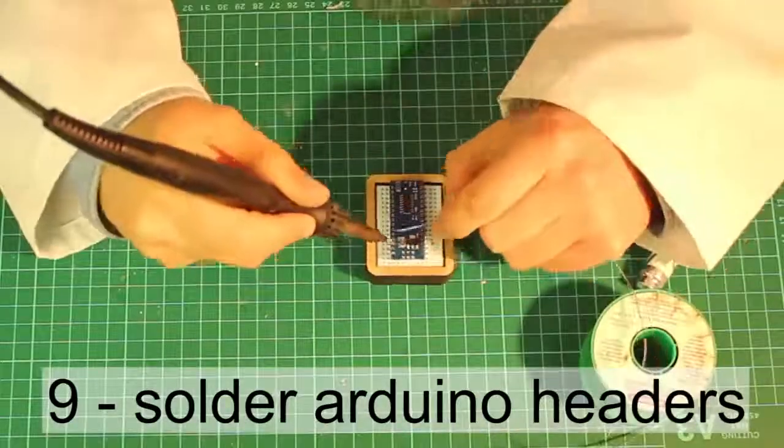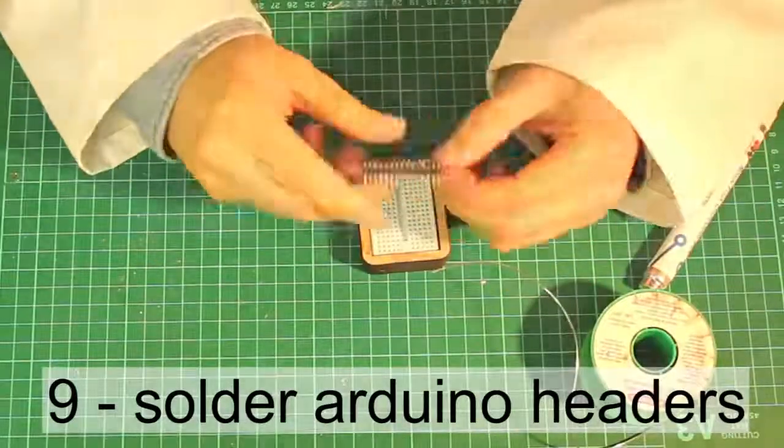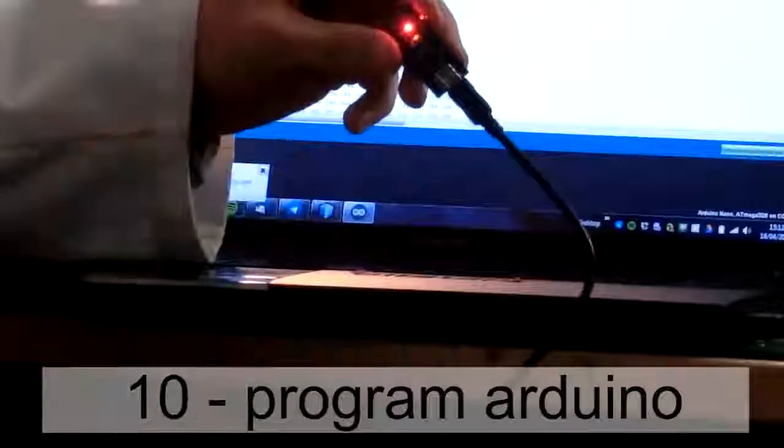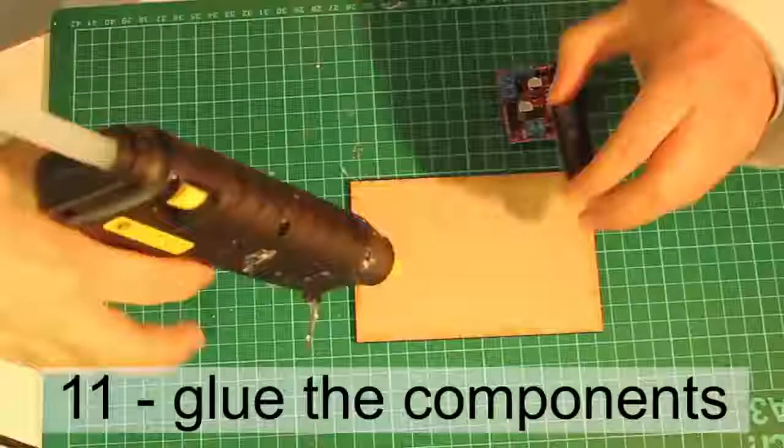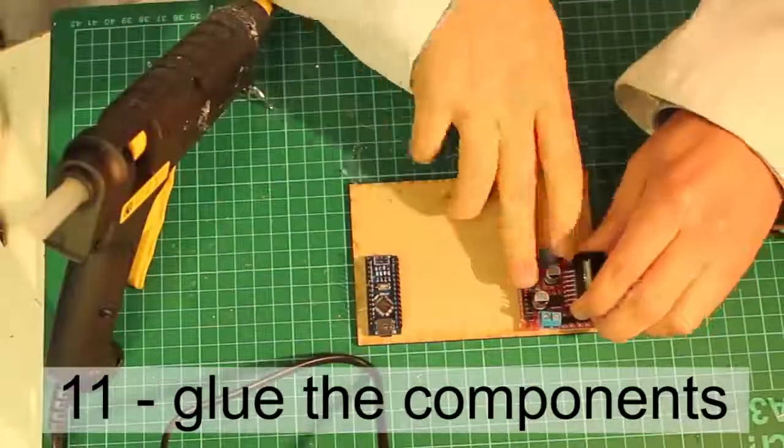Solder the headers of the Arduino backwards. Now you can glue the Arduino and the driver.